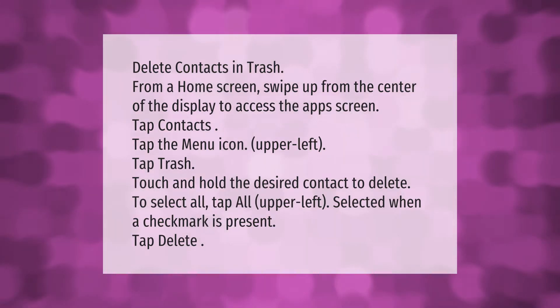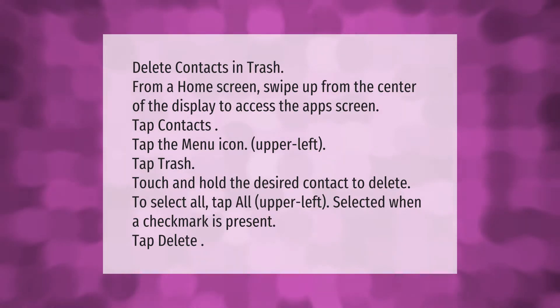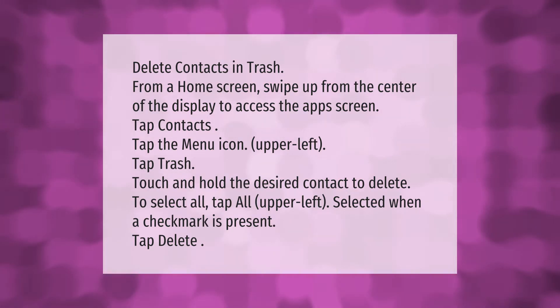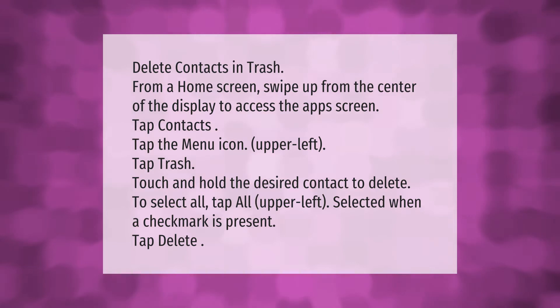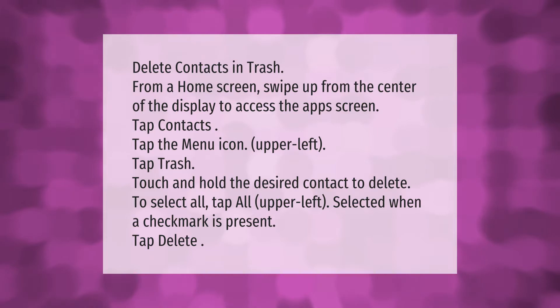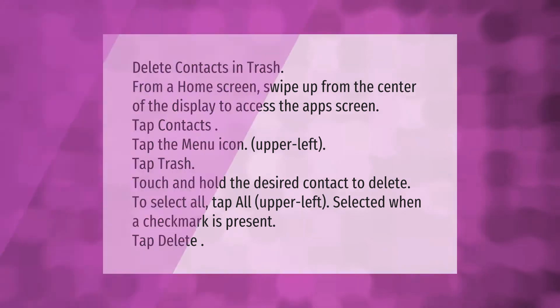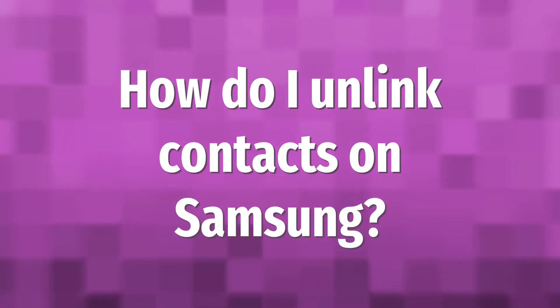To delete contacts in trash, from a home screen swipe up from the center of the display to access the app screen. Tap contacts, tap the menu icon upper left, tap trash. Touch and hold the desired contact to delete. To select all, tap all upper left — selected when a checkmark is present. Tap delete.